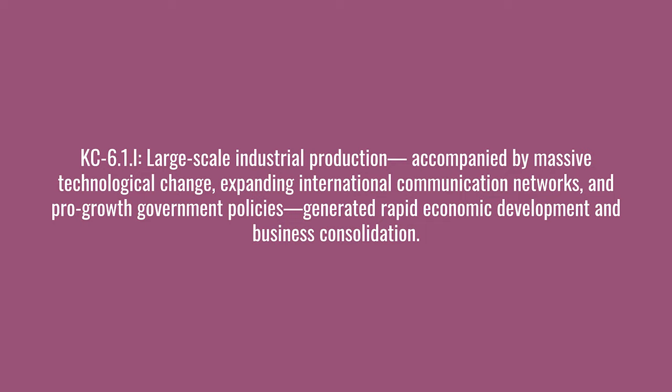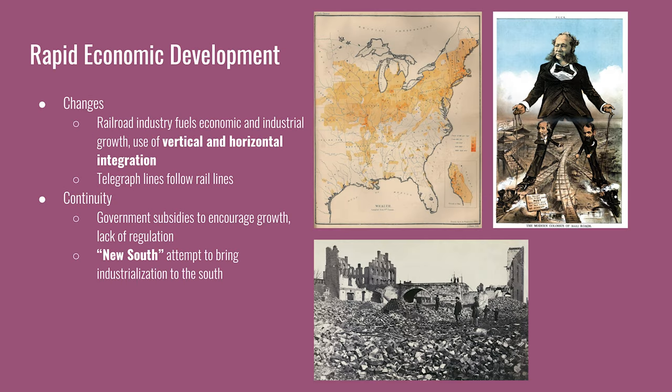The next key concept: large-scale industrial production, accompanied by massive technological change, expanding international communication networks, and pro-growth government policies, generated rapid economic development and business consolidation. Business consolidation is a new change in this period. Vertical and horizontal integration were ways to maximize efficiency in a company and eliminate competitors. Horizontal integration begins in the railroad industry and is adopted in other industries. Vertical integration was used by Carnegie in the steel industry, which allowed him to gain the largest market share. Trusts and interlocking directorates were used to expand market share while skirting laws against monopolies.